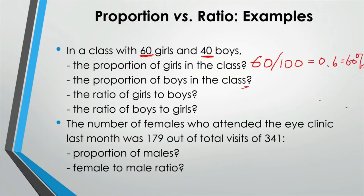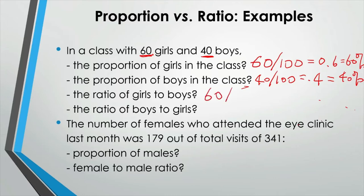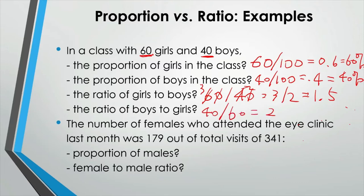The proportion of boys in the class is 40 over 100, so 0.4 or 40%. The ratio of girls to boys is 60 over 40, which is 3 over 2, or 1.5. So there are 1.5 times more girls than boys. And the ratio of boys to girls is just the flipped ratio — that's 40 over 60, which is 2 over 3, approximately 0.67.